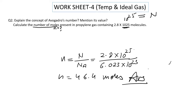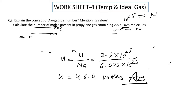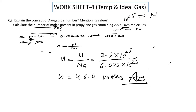Question number two: explain the concept of Avogadro's number and mention its value. Avogadro's number tells us how many total molecules are present in one mole of any gas. According to the relation between moles of gas and the number of molecules, in one mole of any gas there are a total of 6.023 × 10²³ molecules present.